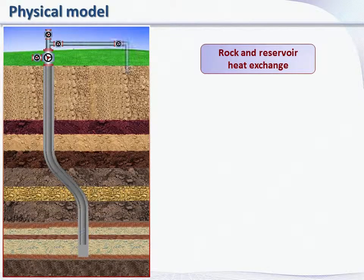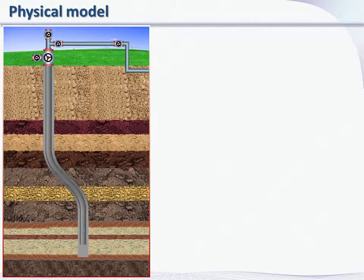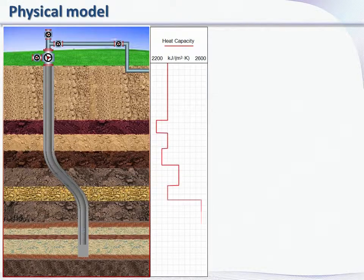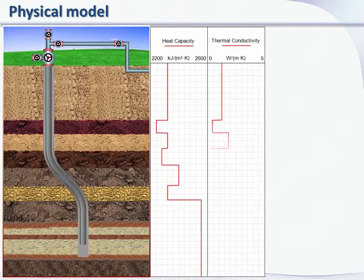This is the sketch of a typical vertical injection well, drilled from the ground surface through a horizontal rock sequence with different thermophysical properties, such as heat capacity and thermal conductivity.